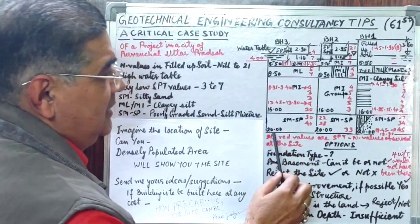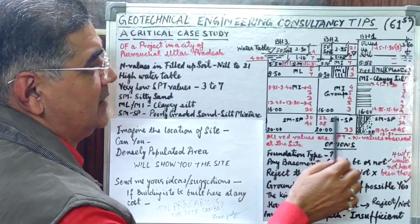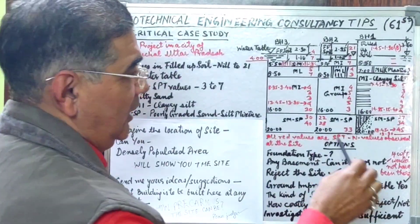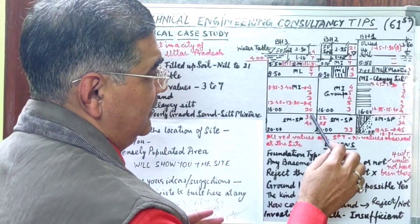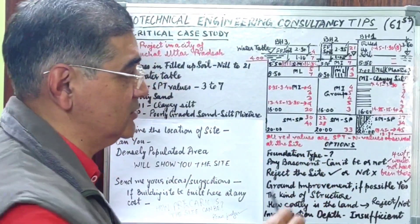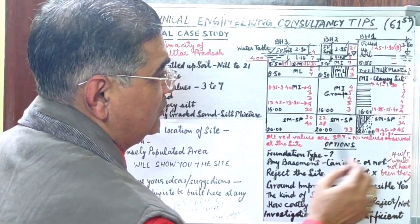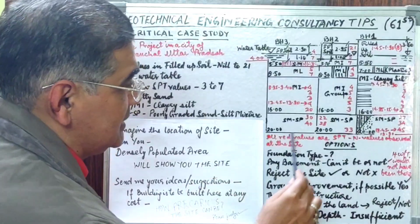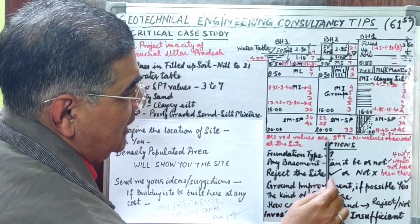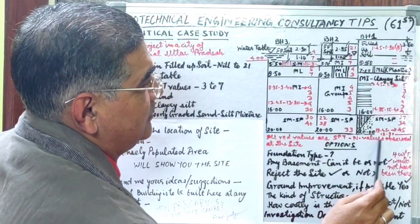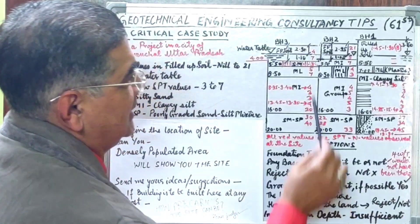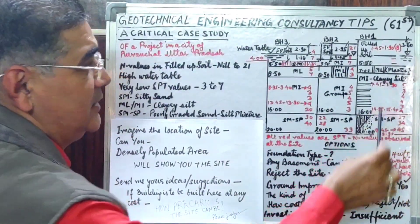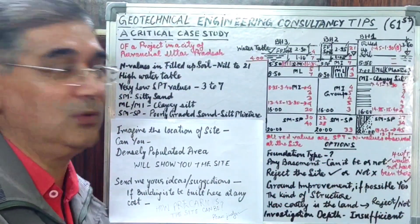After 16 meters, we encountered SM-SP poorly graded sand-silt mixture soil with somewhat higher N-values ranging from 27 to 45. All the red values shown are the SPT N-values observed at the site, demarcated and written down in their respective borehole locations.